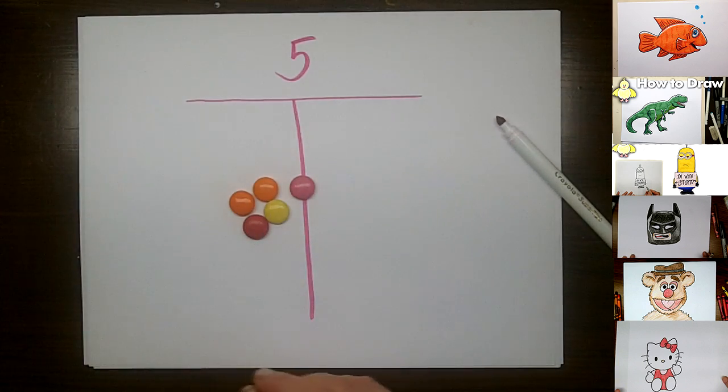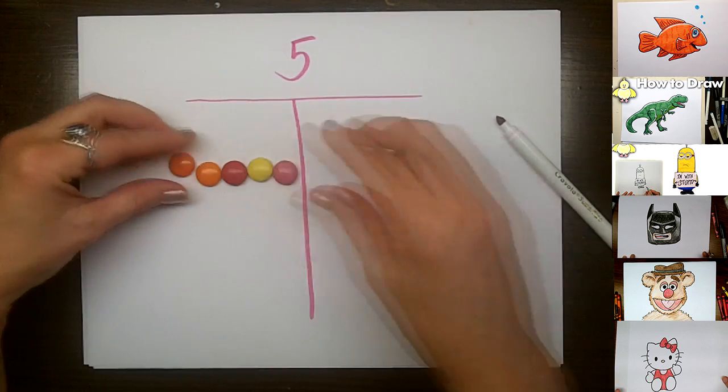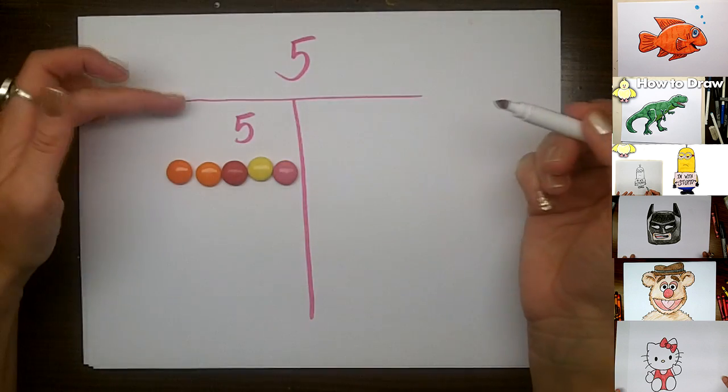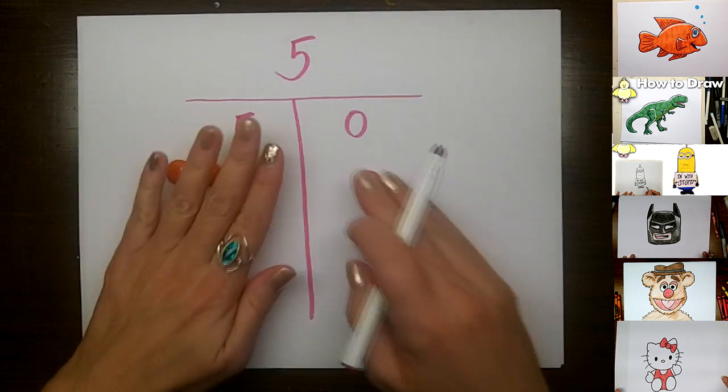So what you need is to get five something interesting, like maybe five Smarties. What you do is you put all of them on one side of the line and you write down that there can be five and then none over here.